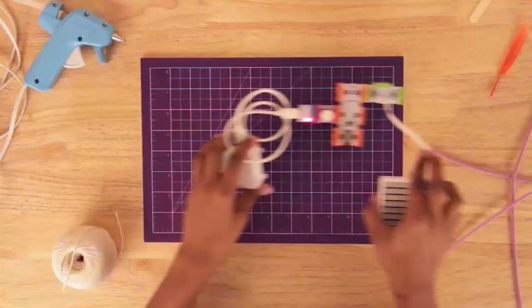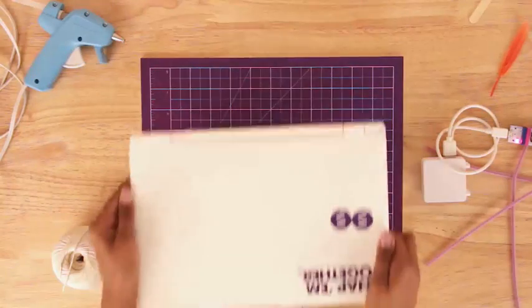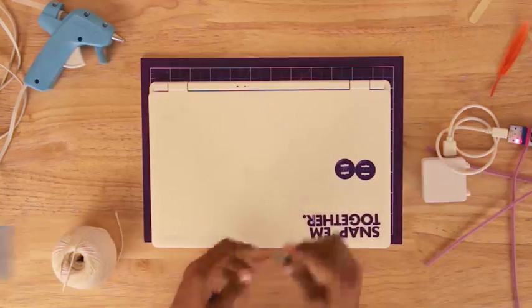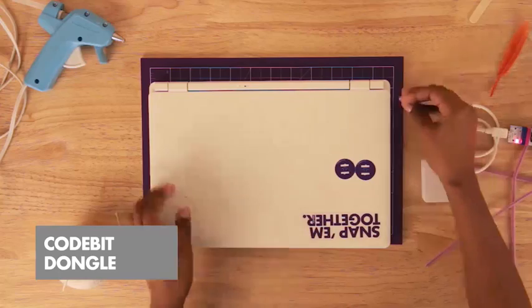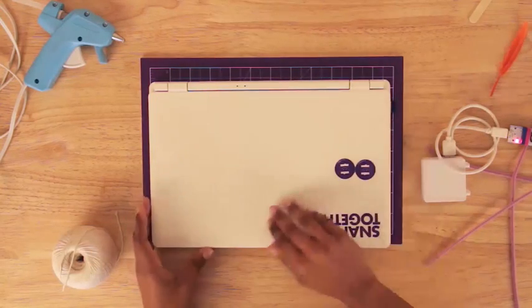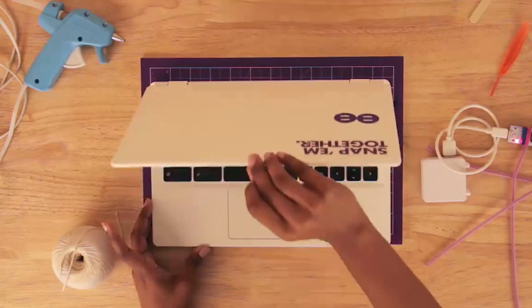Before we start coding, you will need to plug the code bit dongle into a USB port on your computer. Your computer uses this dongle to wirelessly send your code to your code bit.